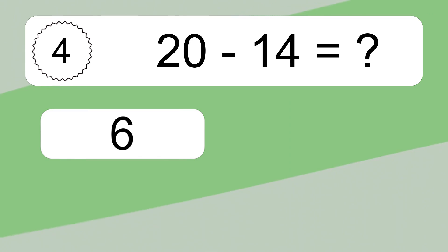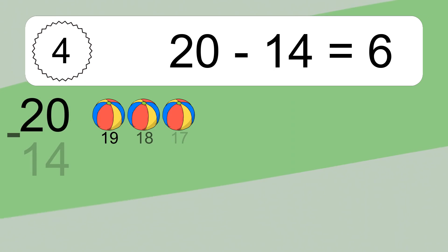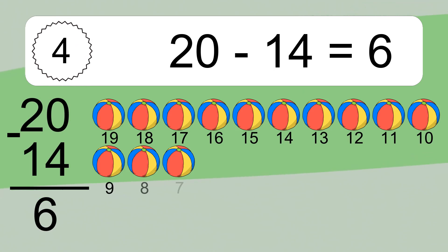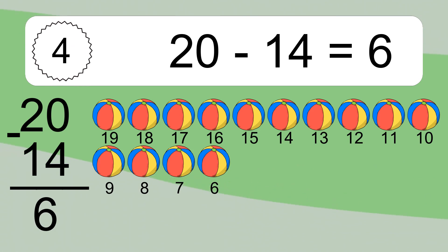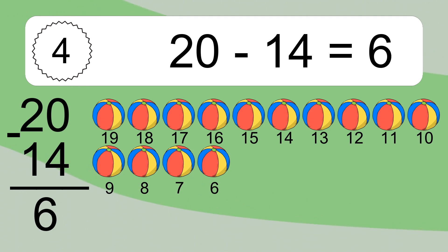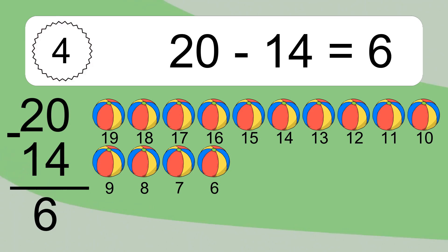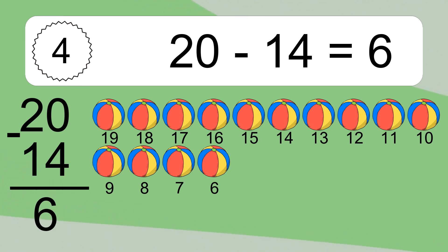20 minus 14 equals what? 20 minus 14 equals 6. Let's count it: 19, 18, 17, 16, 15, 14, 13, 12, 11, 10, 9, 8, 7, 6.